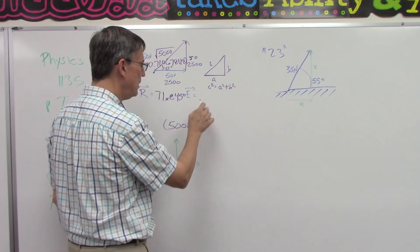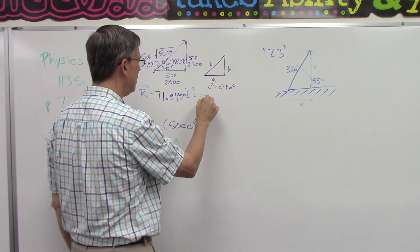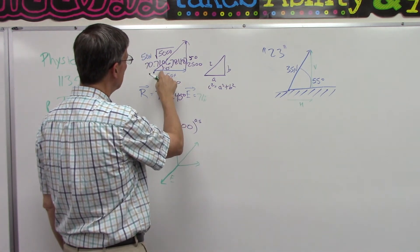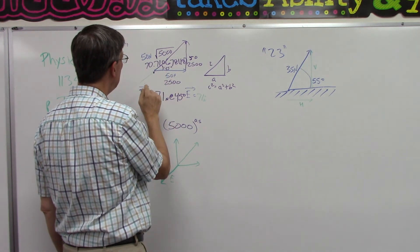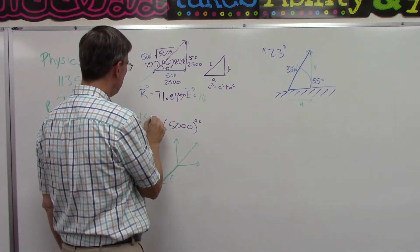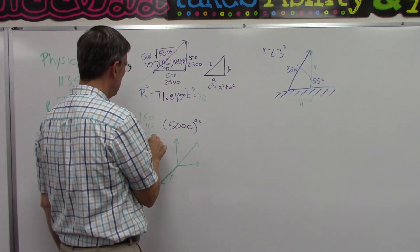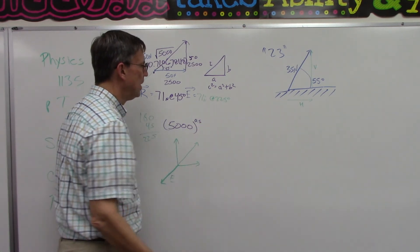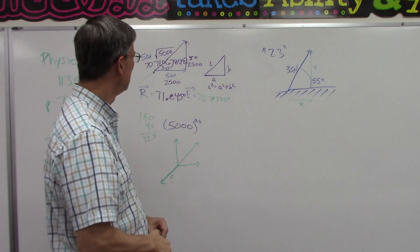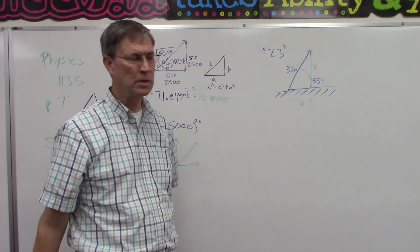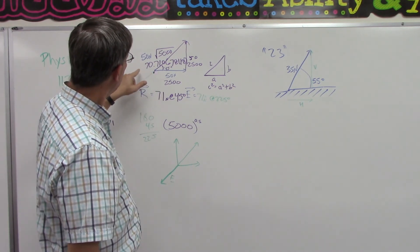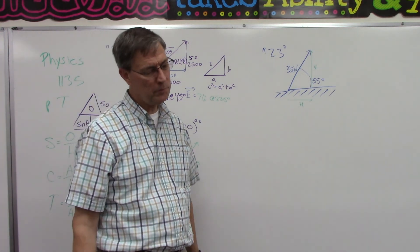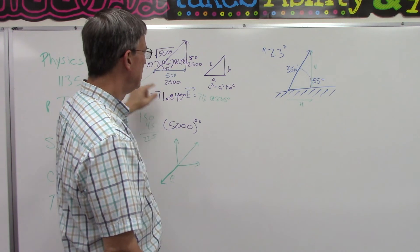So the resultant is the force going that way. The equilibrant is going to be the same force, 71 newtons, but it's going to be at exactly the opposite. So we're going to take 180 plus 45. I would say 225 degrees, but they might, I forget, maybe in the score key they used east and west and north and south or something like that.